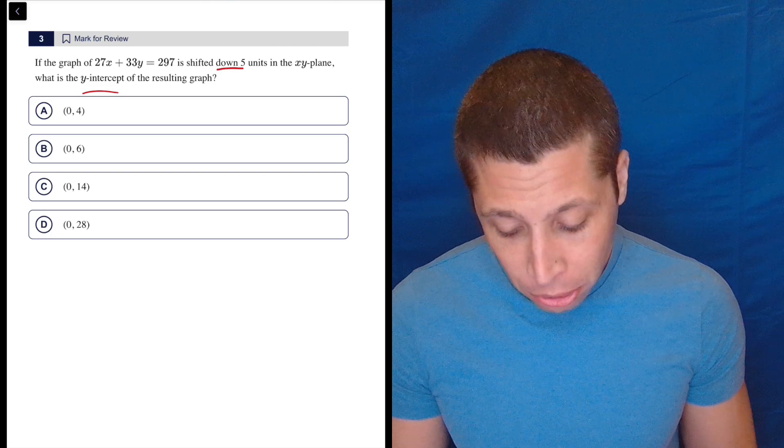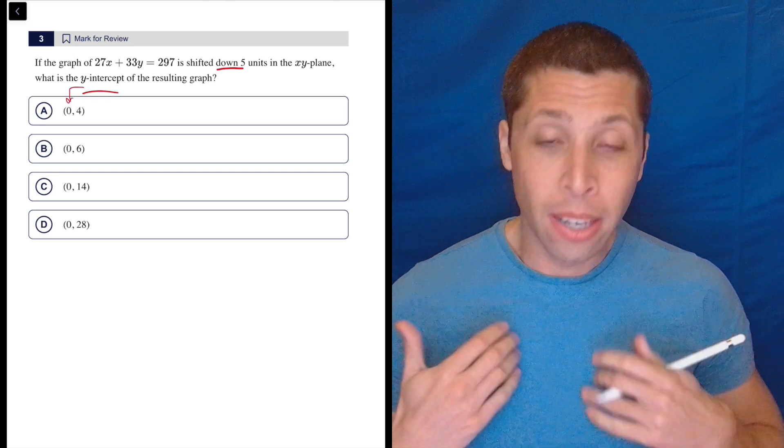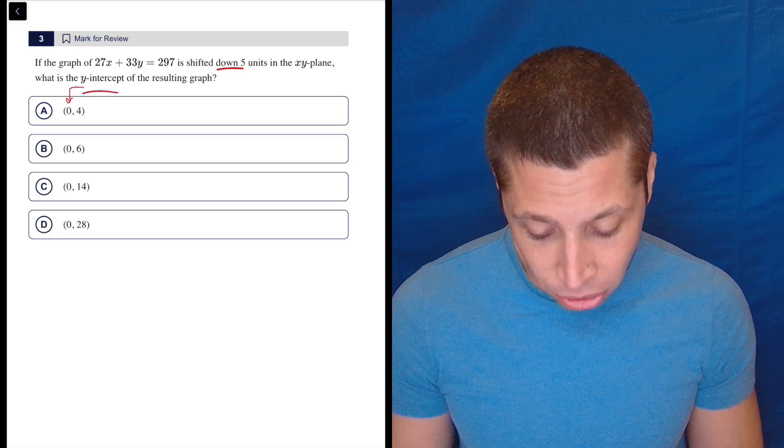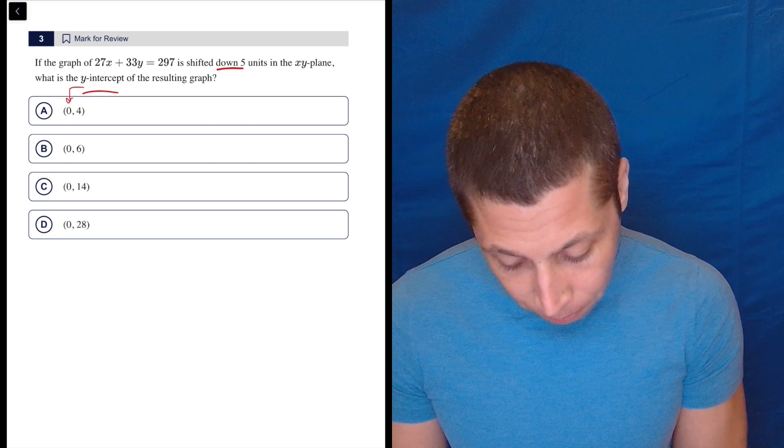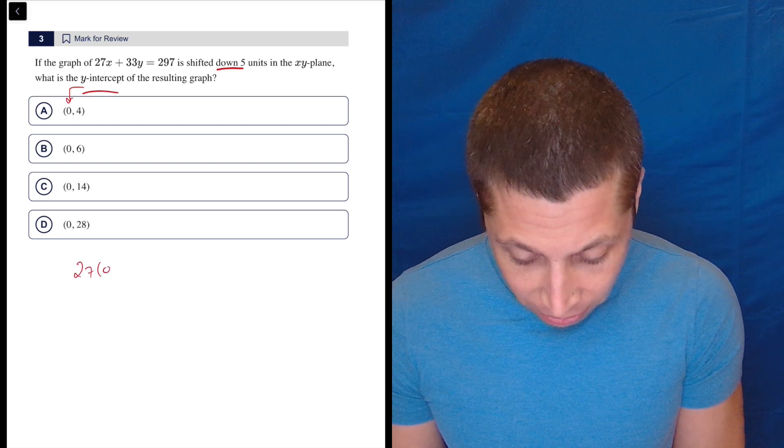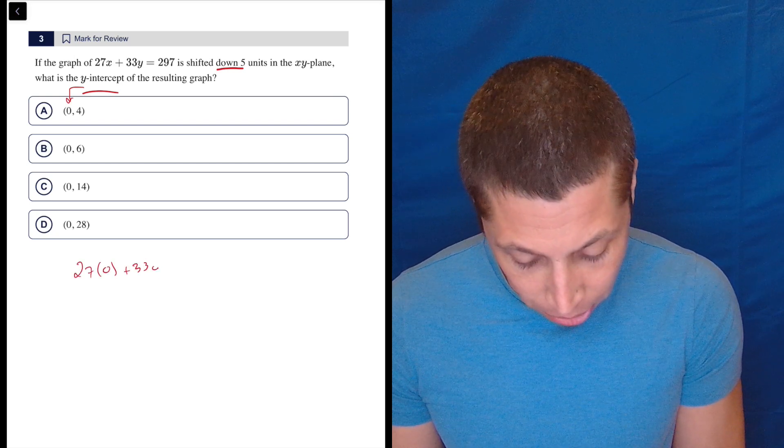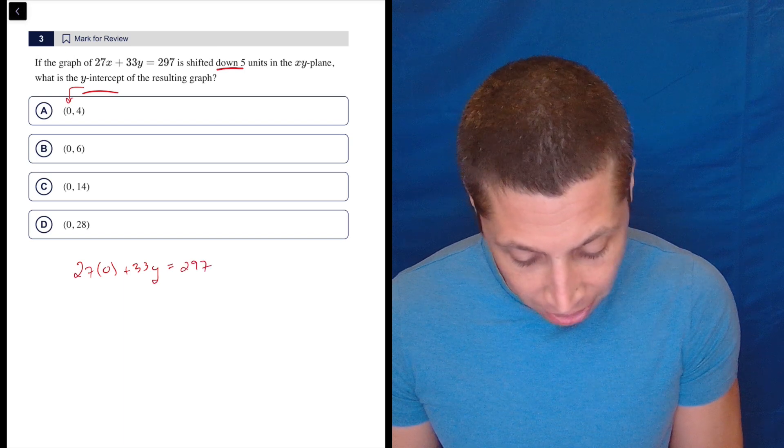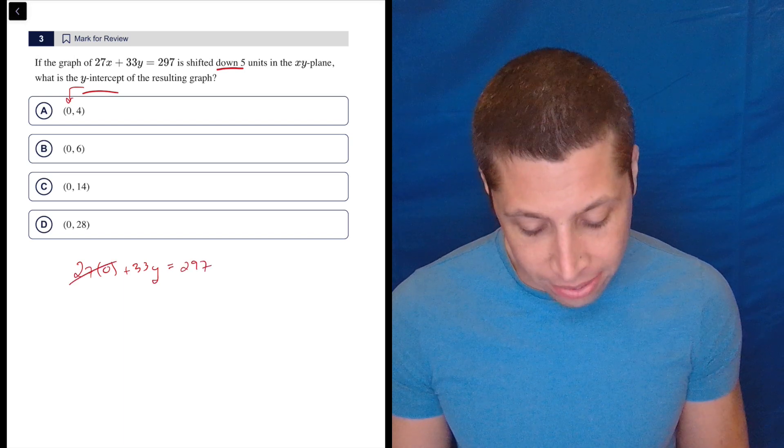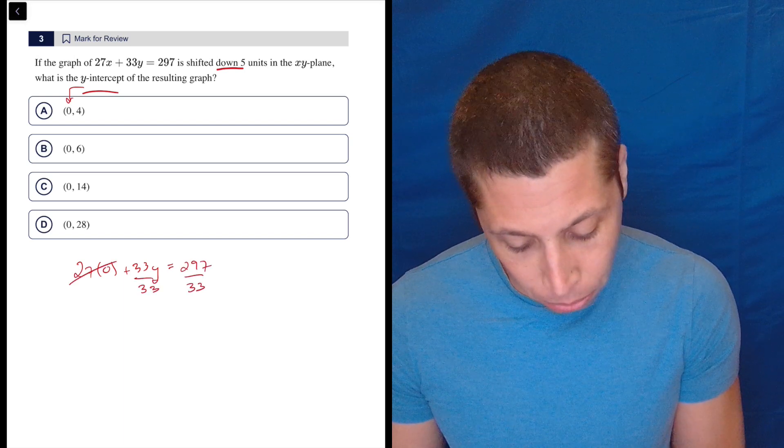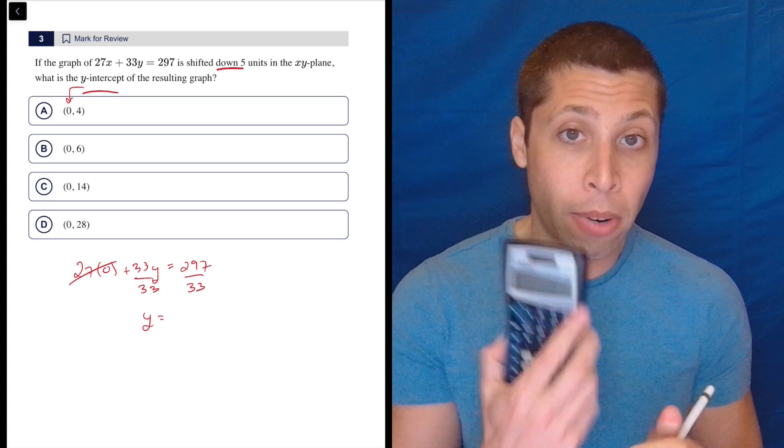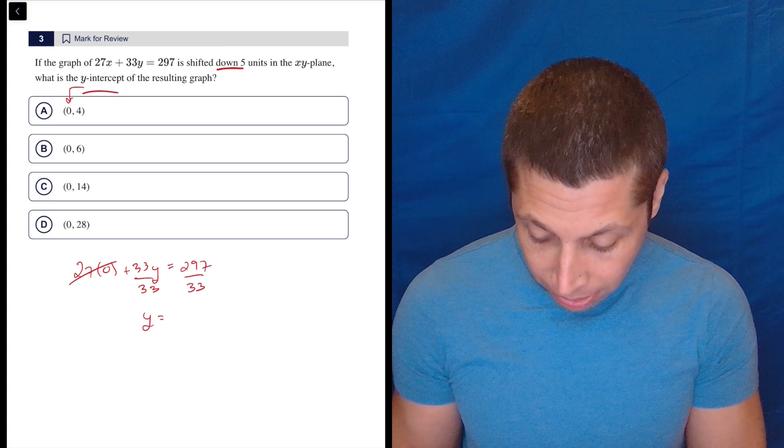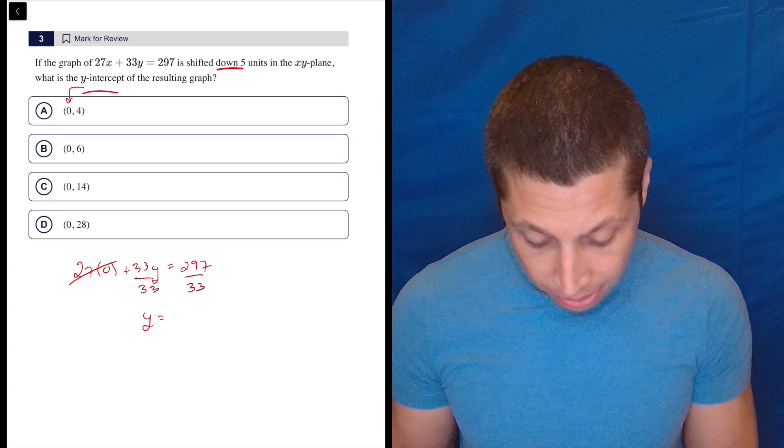Y-intercepts are easy. We can tell from the answer choices that we have to put in 0 for x. So that's going to be 27 times 0 plus 33y equals 297. The zeros knock things out, so we just need to divide by 33. Using a calculator, 297 divided by 33 is 9.